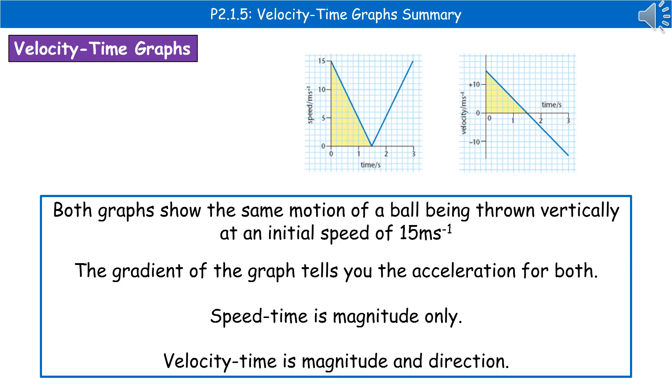Both graphs show the same motion of a ball being thrown vertically into the air at an initial speed of 15 meters per second. The gradient of the graph tells you the acceleration for both.